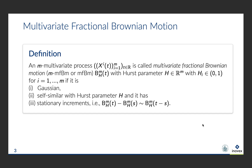First, we introduce multivariate fractional Brownian motion. A stochastic process, or more generally, a mathematical object that is similar to itself at all scales is called a fractal. When you zoom in on a fractal, it resembles or looks exactly like the original shape. This mathematical property is called self-similarity. Fractional Brownian motion is the unique mean-zero Gaussian process which is zero at the origin and has self-similar increments with Hurst parameter h, and it has stationary increments as well.